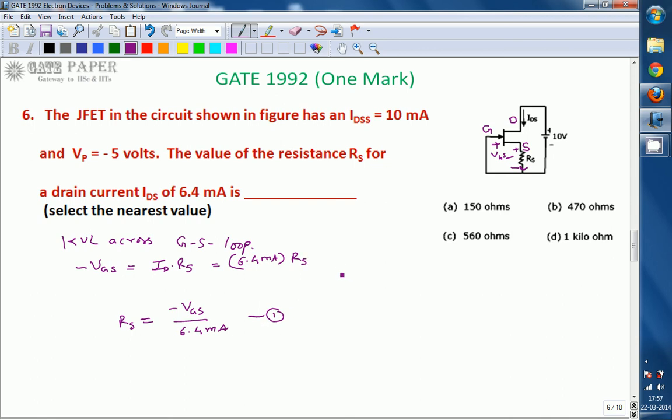We need VGS value. To know the VGS value, we should use the drain current equation in saturation for JFET. ID equals IDSS multiplied by 1 minus VGS divided by VP whole square. Remember, VGS and VP must have the same sign. So 6.4mA equals 10 into 1 minus VGS by VP whole square.